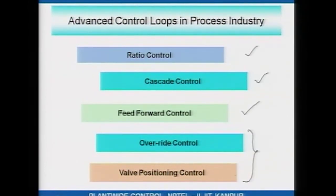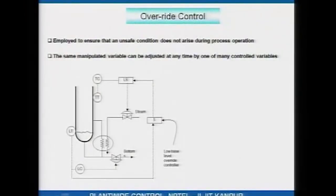We continue to discuss override control and valve positioning control. Override control, like the word indicates, is when an overriding circumstance occurs during process operation which can potentially result in a safety hazard. Override control ensures that the unsafe condition does not arise, and what override essentially means is the same manipulated variable is adjusted by different controllers.